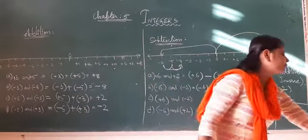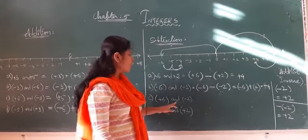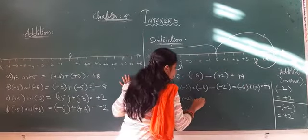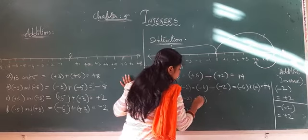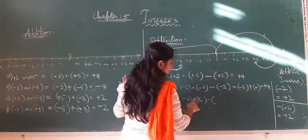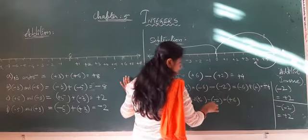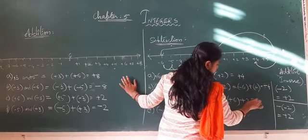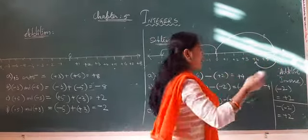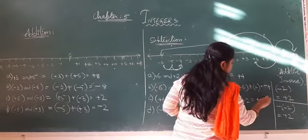Coming to the third subtraction example: plus 6 and minus 2. That is plus 6 minus bracket minus 2. Using additive inverse, minus of minus 2 becomes plus 2. So it becomes plus 6 plus 2. From 6, taking 2 more steps forward — plus 7, plus 8 — that is plus 8. The answer is plus 8.